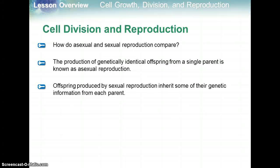Now looking more in depth at cell division and reproduction, we're going to compare sexual and asexual reproduction. When producing genetically identical offspring from a single parent, that's asexual reproduction — the prefix 'a' means 'not' or 'without,' so asexual reproduction means without sexual reproduction. When producing offspring that combine genetic information from each parent and are genetically different from their parents, that is sexual reproduction.